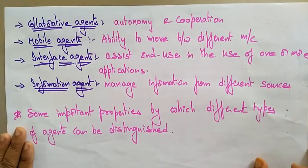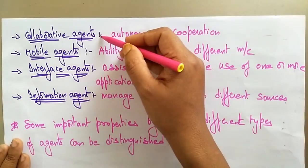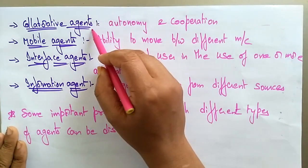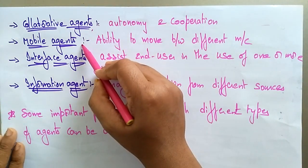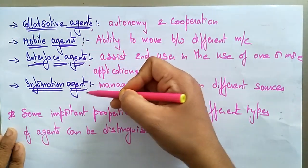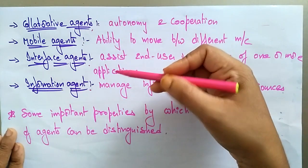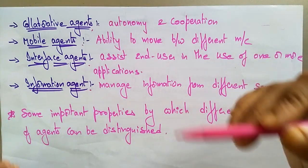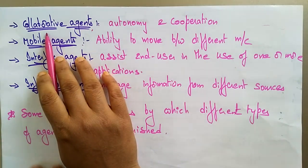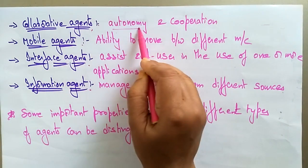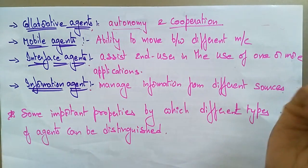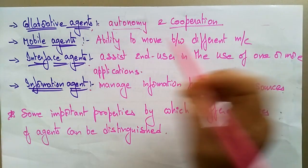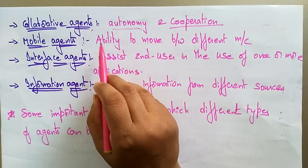The different types of software agents are: collaborative agents, mobile agents, interface agents, and information agents. These are all independent of each other and based on their requirements they can perform and release services. A collaborative agent is autonomous and cooperative — the word itself implies collaboration, so autonomy and cooperation are established here.